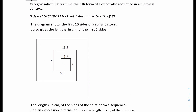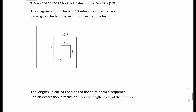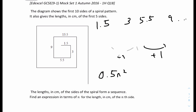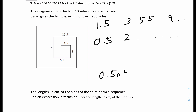For the last question, a diagram shows the first 10 steps of a spiral pattern with lengths in cm. Writing the values out: 1.5, 3, 5.5, 9, and so on. The first differences are +1.5, +2.5, +3.5, and the second difference is +1 throughout. Dividing 1 by 2 gives a coefficient of 0.5 for n², so we start with 0.5n². The values of 0.5n² are 0.5, 2, 4.5, 8.